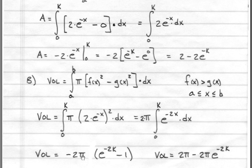Volume is equal to minus 2 pi times e to the minus 2k minus 1, or volume is 2 pi minus 2 pi e to the minus 2k. This is our second answer for the second portion of the problem.